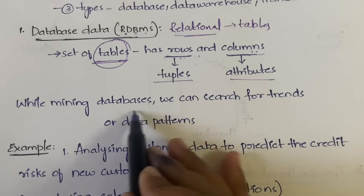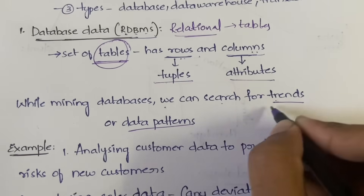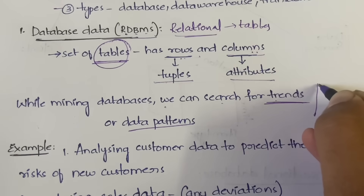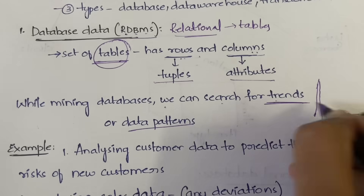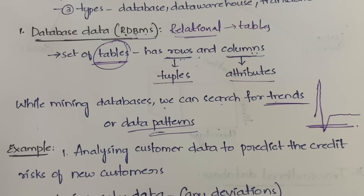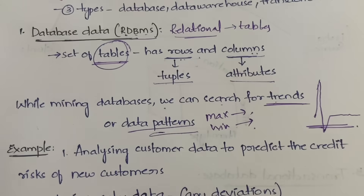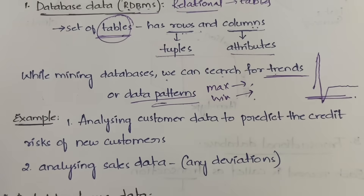While you are mining the databases — mining the tables — what output can you get? You can search for trends and data patterns. Trends, for example, are where sales are increasing, decreasing, or neutral. Data patterns — suppose you have a list of marks of all students of a class in a table, you can observe patterns like how many people scored maximum marks and how many scored minimum marks.